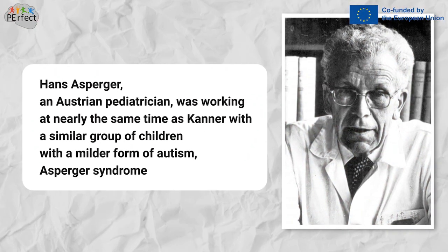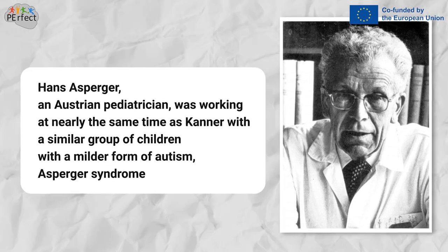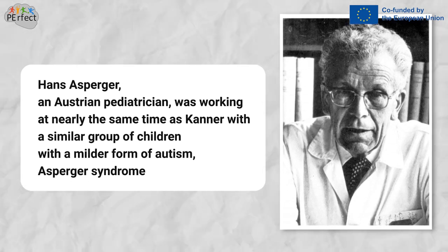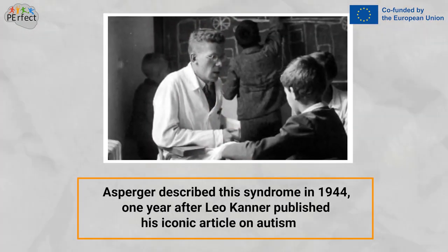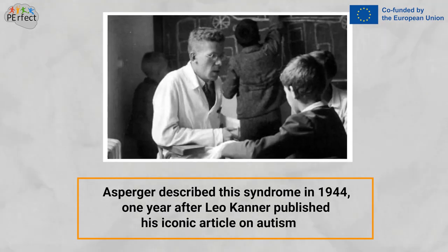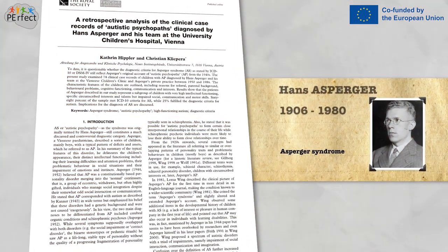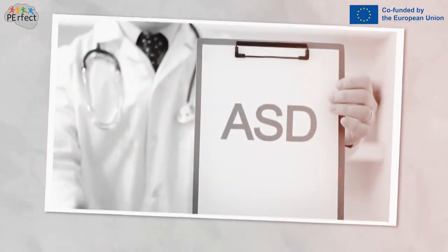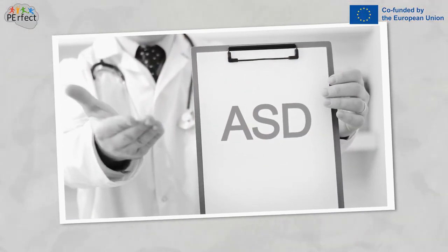Hans Asperger, an Austrian paediatrician, was working at nearly the same time as Kanner with a similar group of children with a milder form of autism, Asperger syndrome. Asperger described this syndrome in 1944, one year after Leo Kanner published his iconic article on autism. He presented case studies, just as Kanner had, about a particularly interesting and highly recognisable type of child.